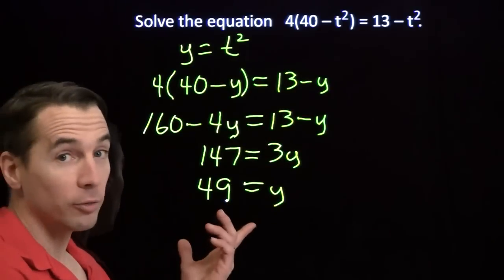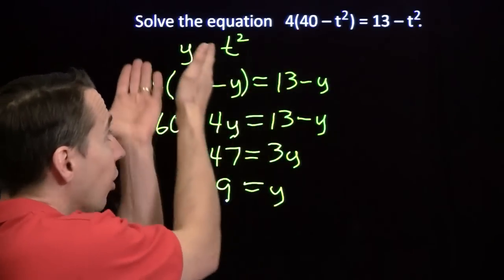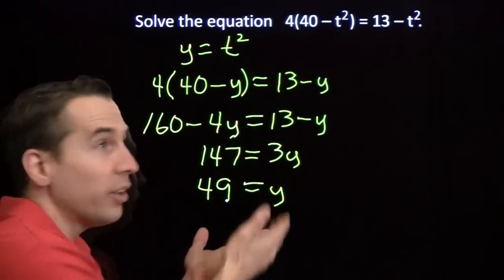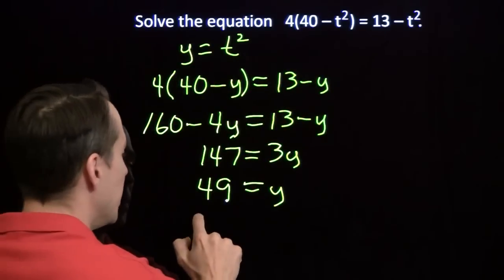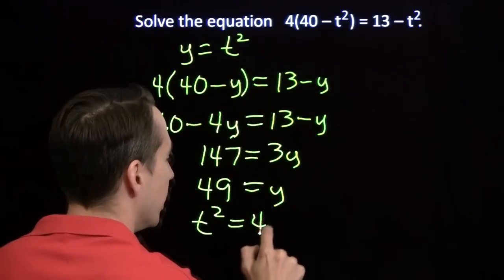Now, of course, we're not looking for y. We're looking for t. Solve the equation doesn't mean find the values of y. There's no y up there. We need t. Y equals 49. That means t squared equals 49.